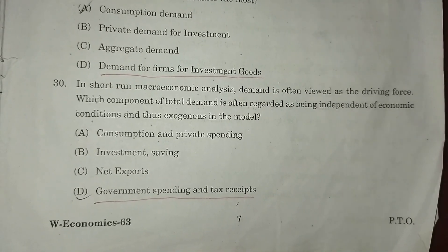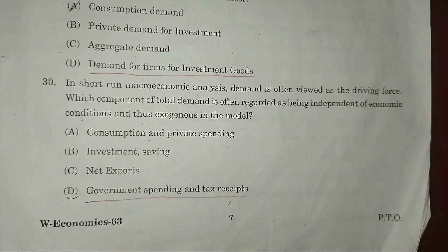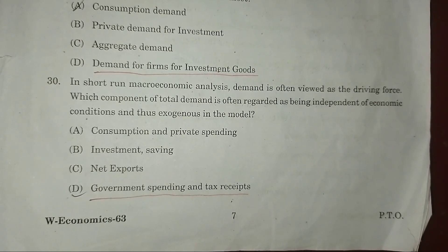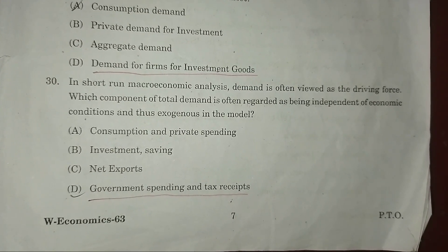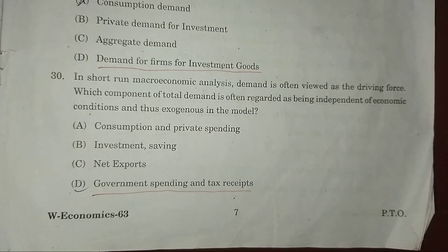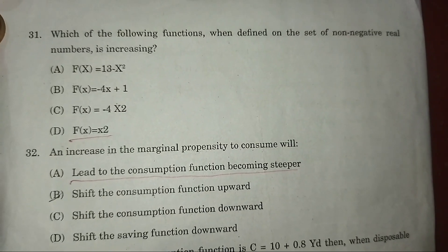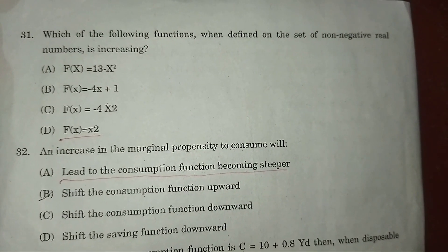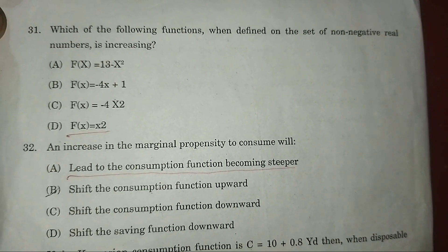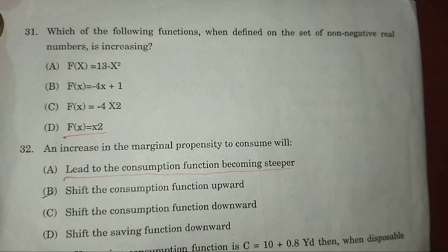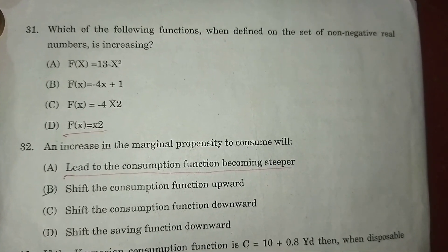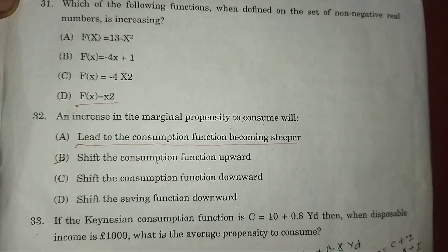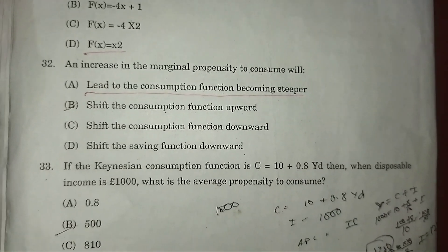Answer: D — government spending and tax receipts. Question 31: Which of the following functions, defined on the set of non-negative real numbers, is increasing? Answer: D — f(x) = x².